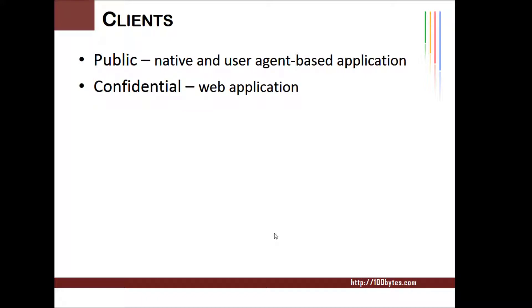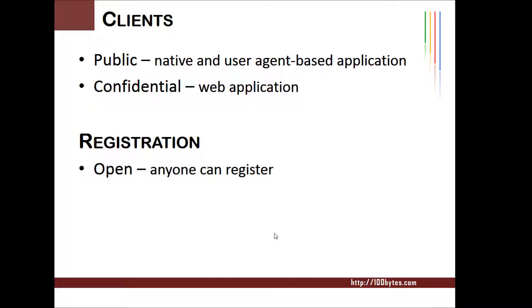There are two types of clients: public clients and confidential clients. Public clients are those that cannot securely hold a secret — native apps and user-agent-based applications fall under this category. Confidential clients can hold secrets securely — web applications fall in this category. There are two ways to register a client with the OAuth server: open registration, where anyone can register, and dynamic registration, which requires an initial access token. Note that registration types are not defined in the OAuth 2.0 standard but are defined in the OpenID Connect standard.